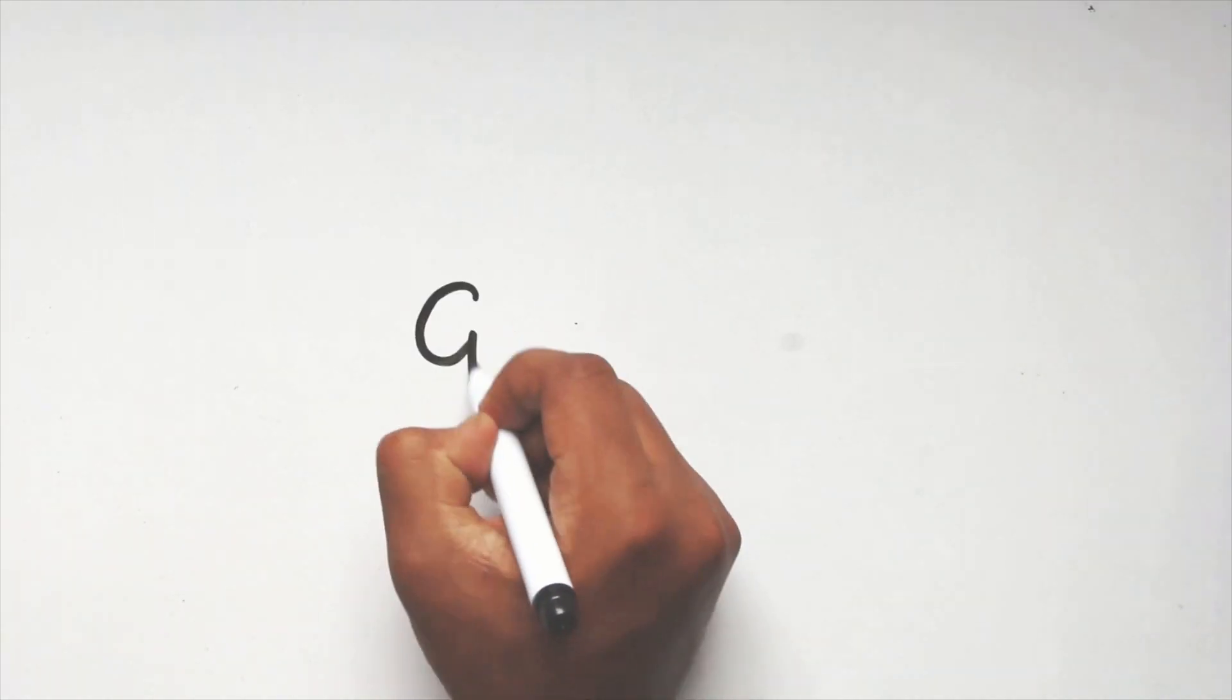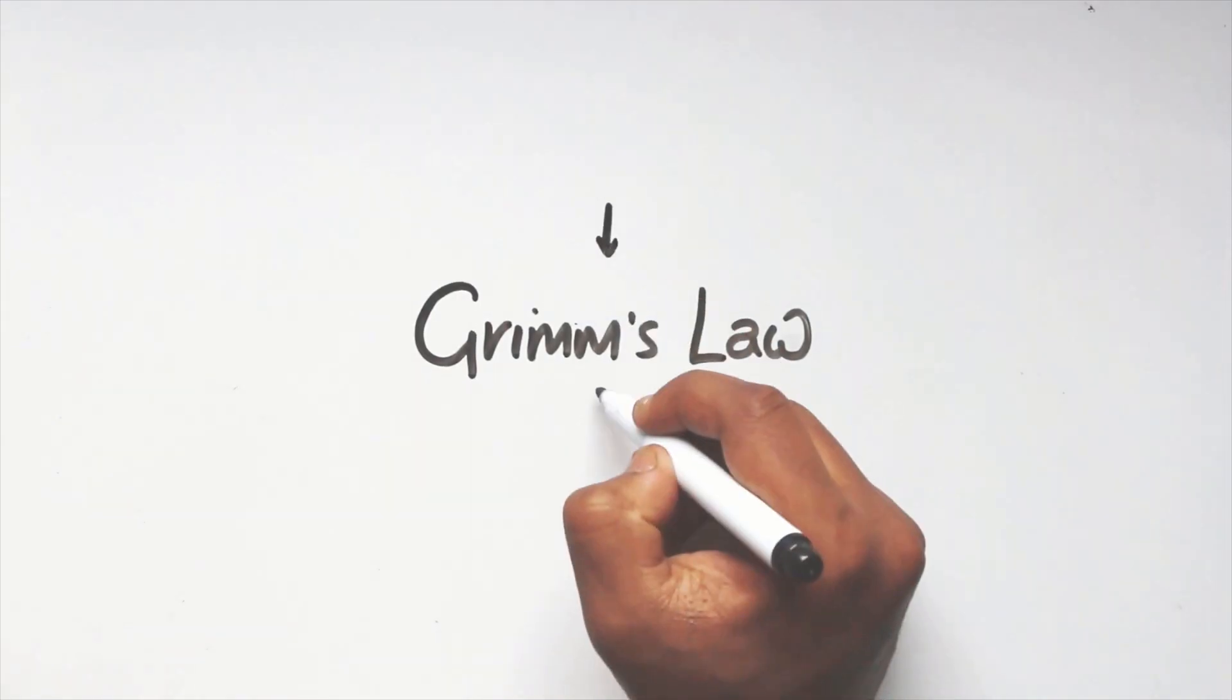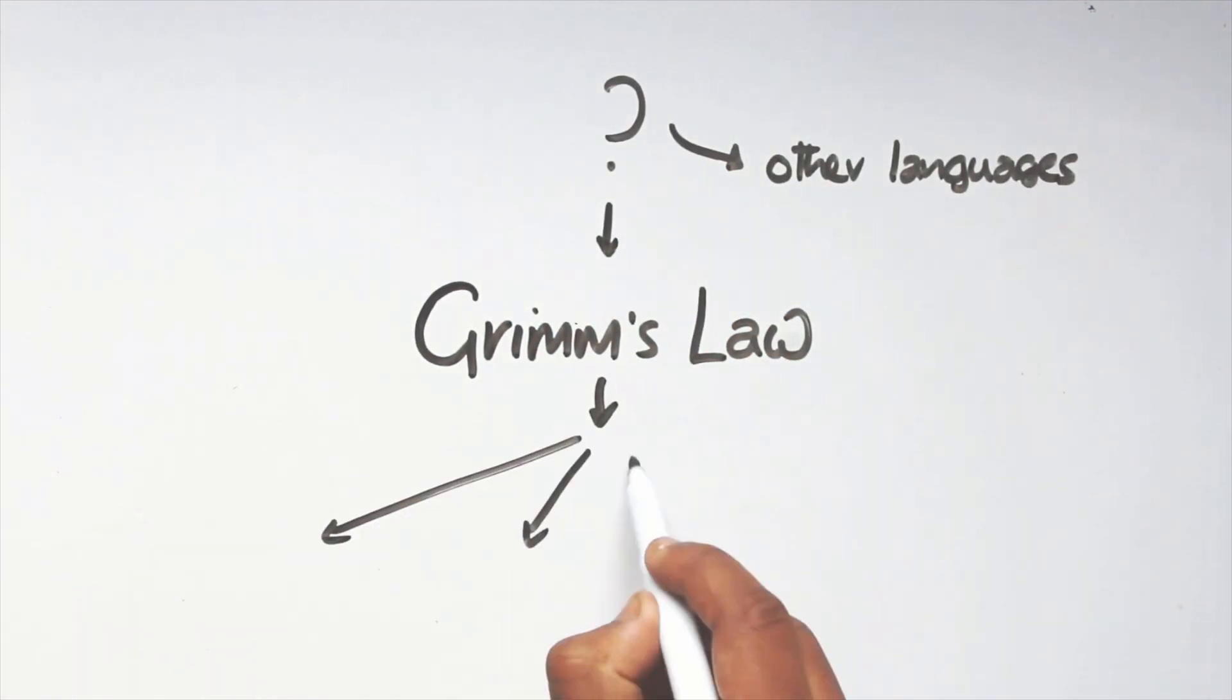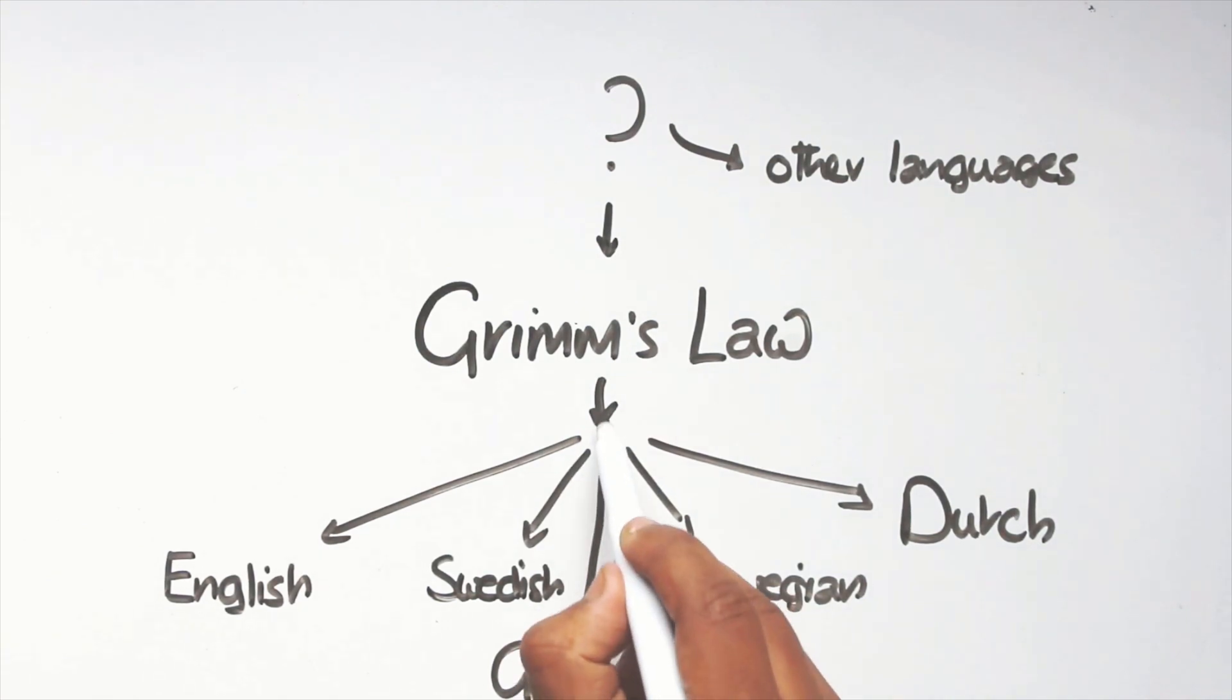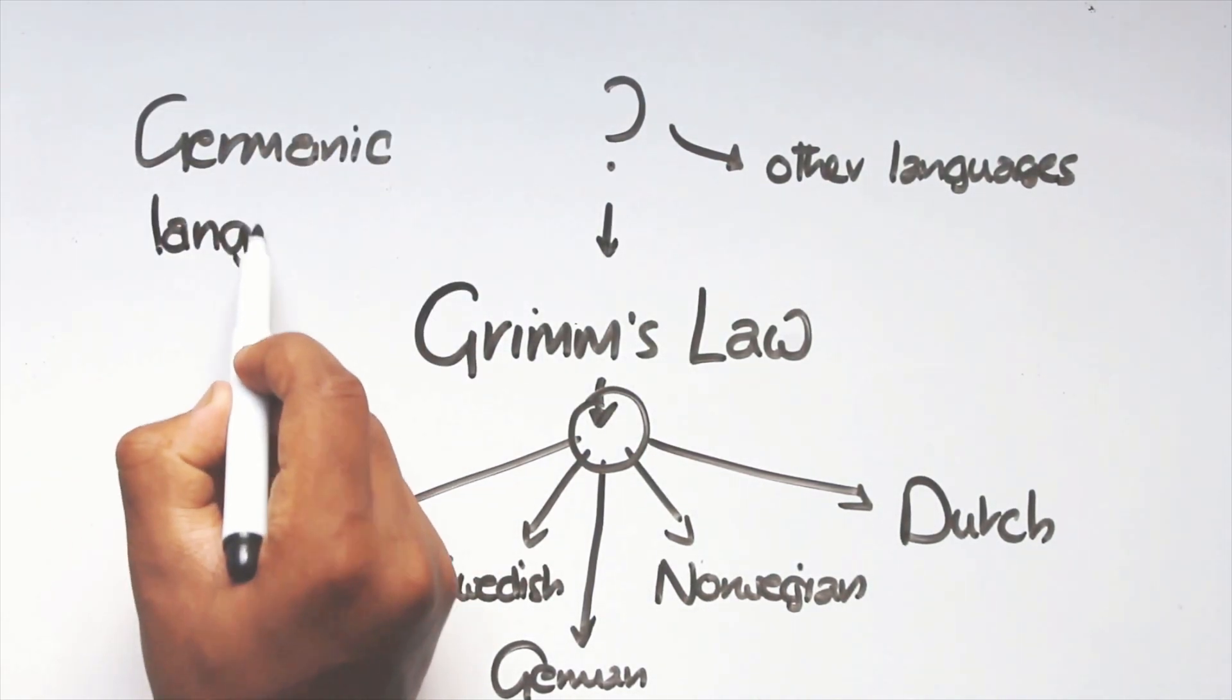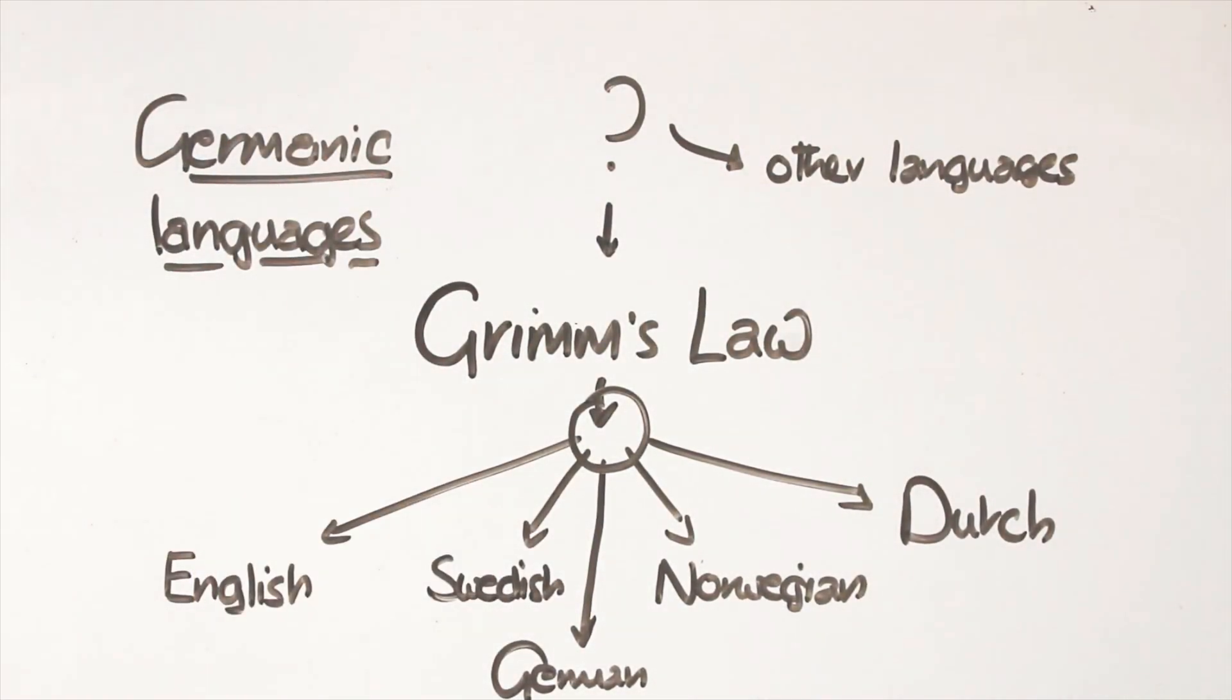Congratulations, you have discovered Grimm's Law, a sound change that not only happened to English, but German, Norwegian, Swedish, Dutch and more, at a point in time when all of these were the same language, before they all split up. We call these languages Germanic languages, which we will cover in a later video.